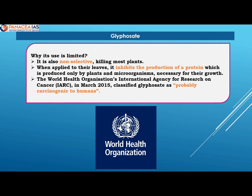Besides, plants ek protein ka production karte hai, which is required for their growth. Glyphosate is protein ka production ko bhi hinder karta hai. At last, WHO ke International Agency for Research on Cancer ne, isme carcinogenic agents — matlab cancer causing agents — ke present honne ki bhi probability ko indicate kiya hai. So, these are the reasons that government had decided to put restrictions on its use.